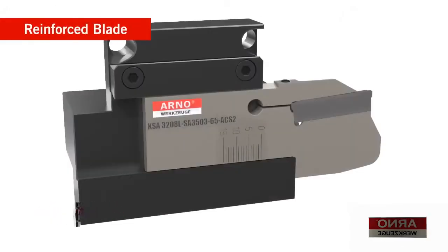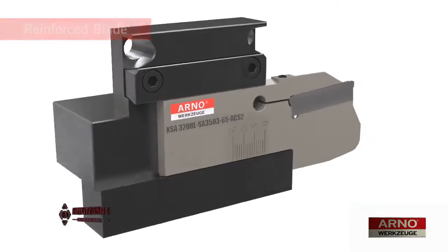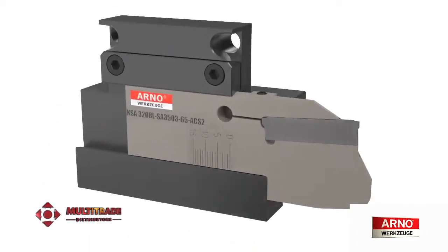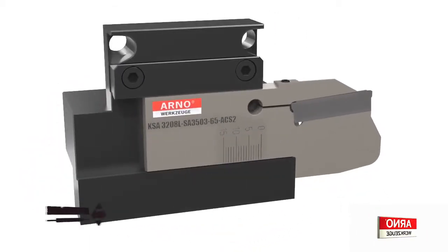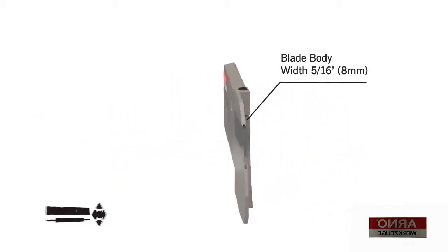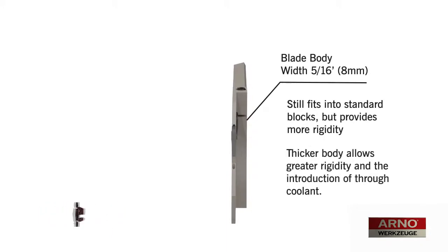The reinforced blade system is designed to fit in standard 26- and 32-millimeter blade blocks as a direct upgrade to weaker, less stable parting blades that have only passive insert clamping. The 5-16-inch-wide body increases surface quality and accuracy by reducing blade flex.